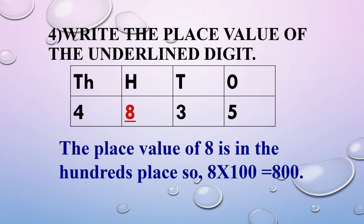Fourth example: write the place value of the underlined digit. Let us take 4835. We write 4835 in the place value chart as: digit 4 in the 1000's place, digit 8 in the 100's place, digit 3 in the 10's place, digit 5 in the 1's place. The underlined digit 8 is in the 100's place, which means there are 8 hundreds, so its place value is 8 into 100, that is 800.